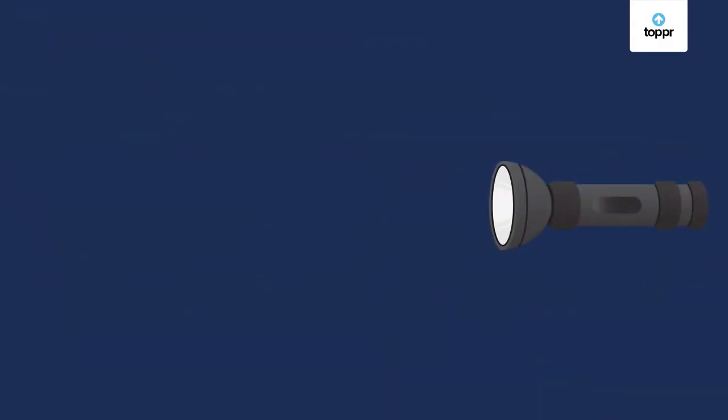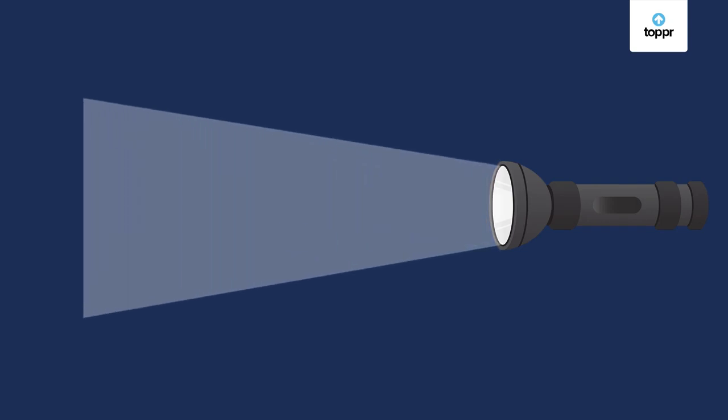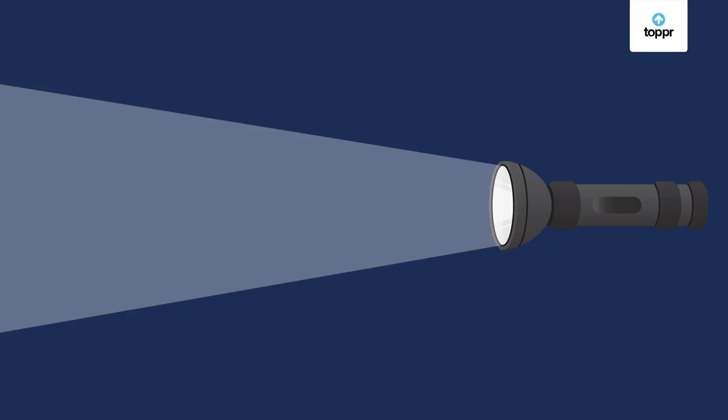Consider the light from a torch. You can see a beam of light arising from the source here. Now how do we represent this beam on paper? It is simply a group of light rays. Therefore the light beam from this torch can be represented on paper like this.